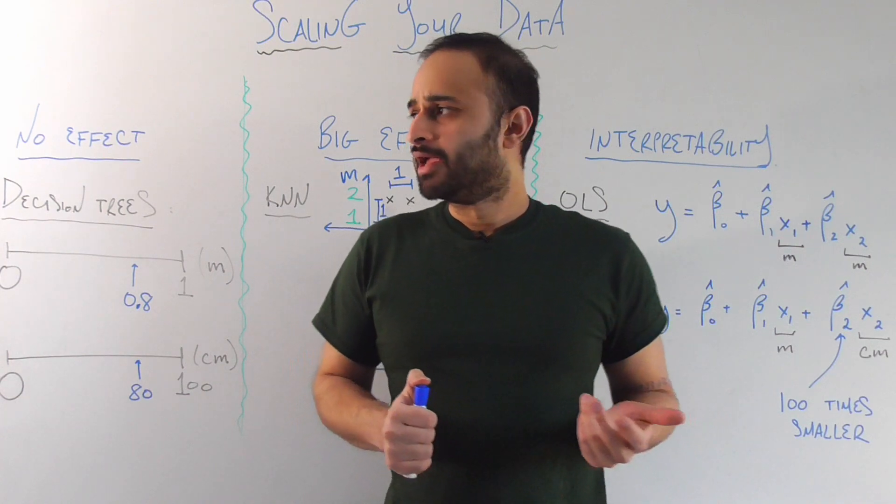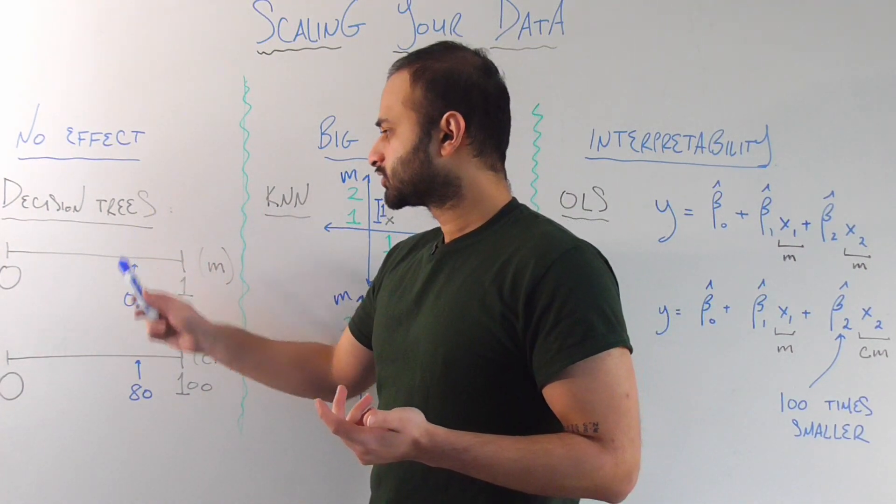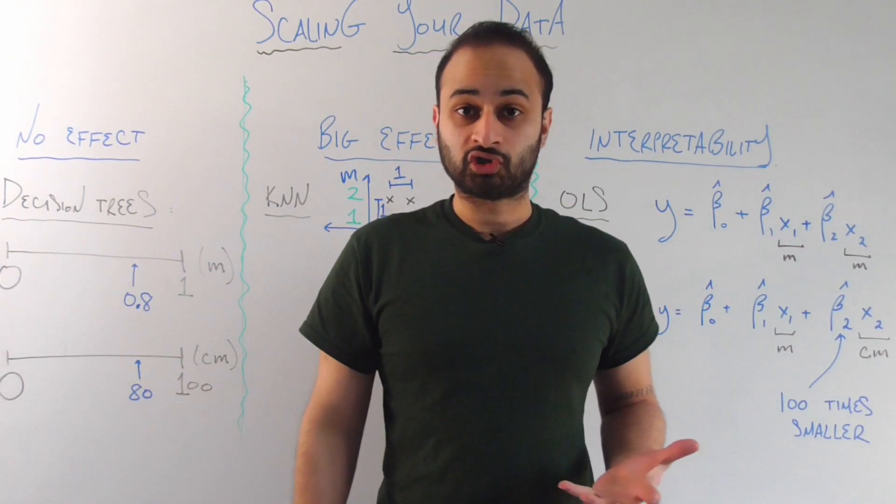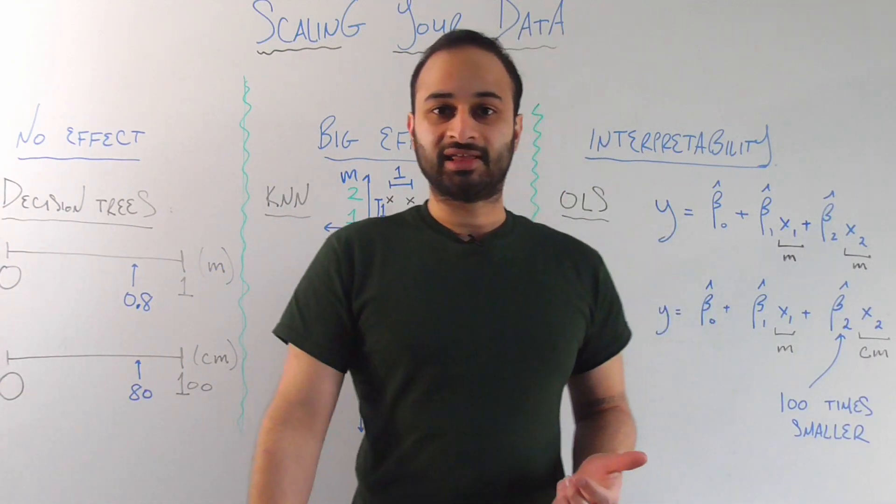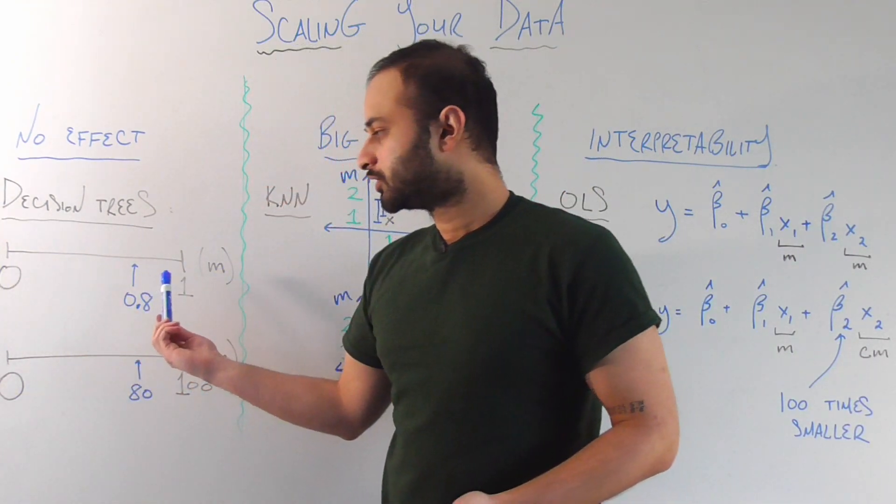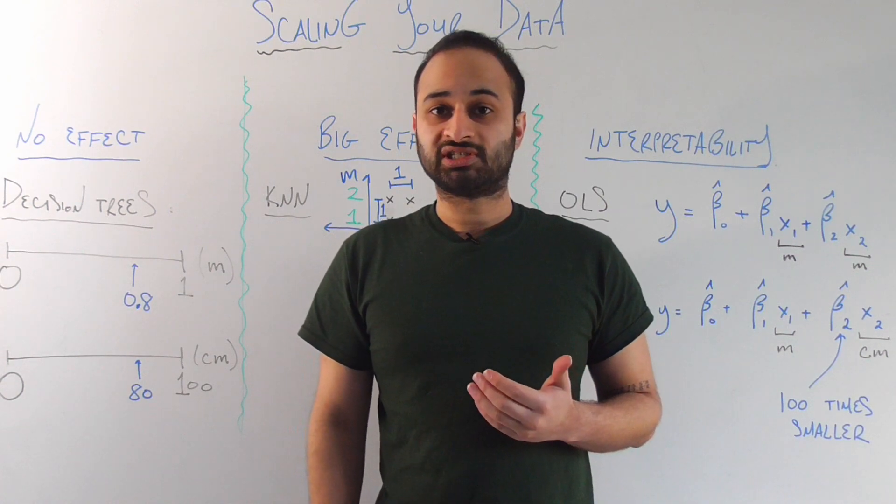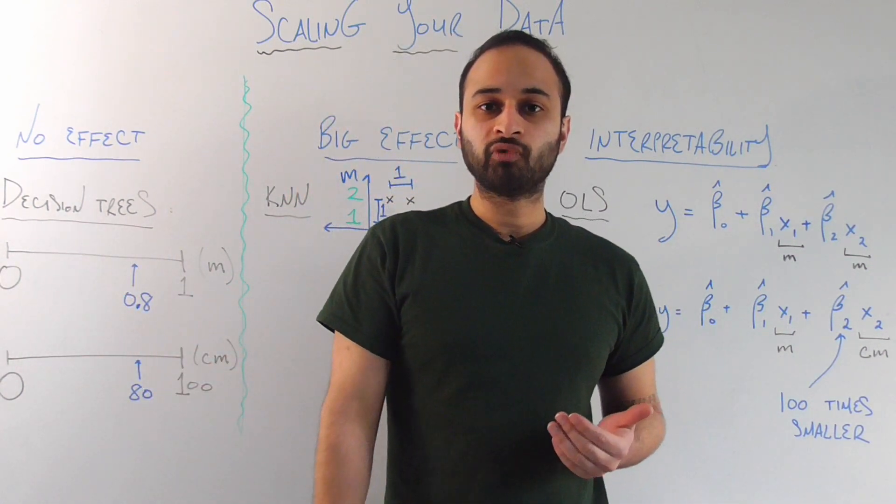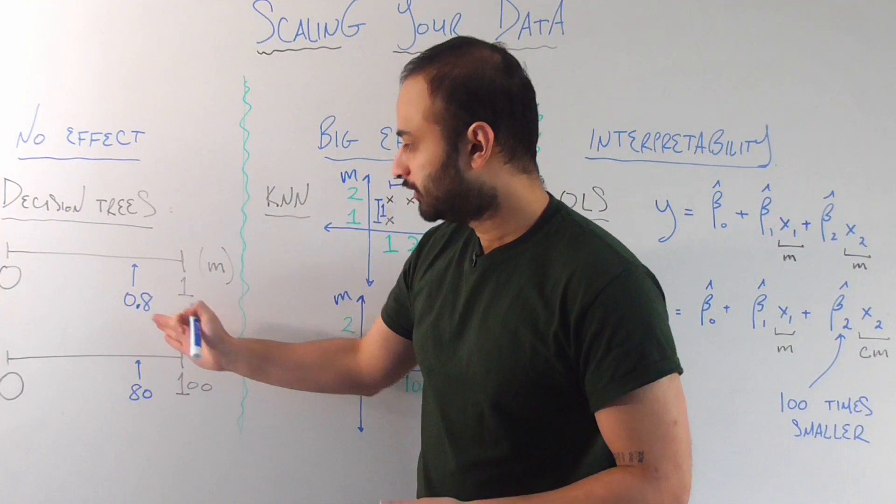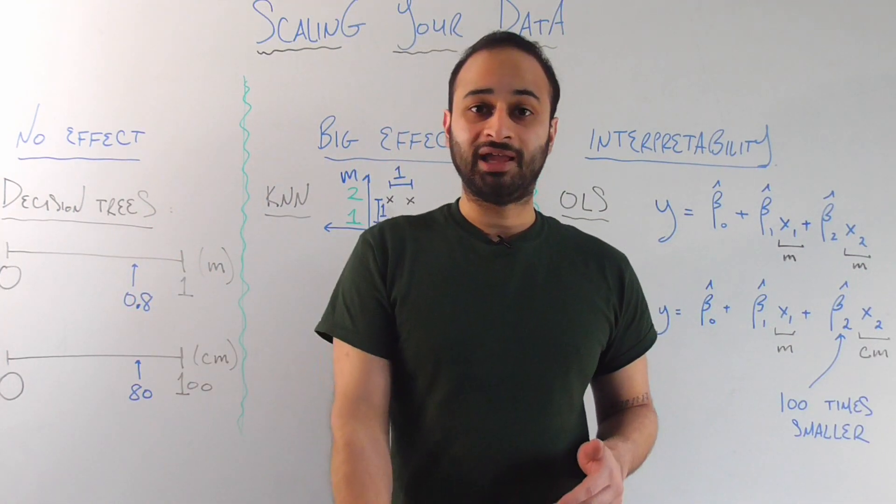To see this, it's pretty simple. If you think about how a decision tree works, let's say you have some variable that's measured in meters, and let's say that ranges between 0 and 1 meters. Decision trees are going to say, where is the best split of this variable? So that if I were to split it there, let's say the best split was at 0.8 meters.